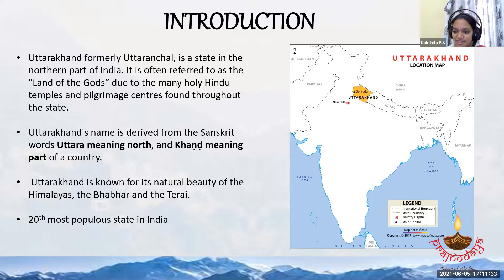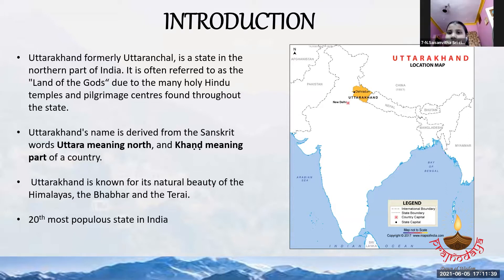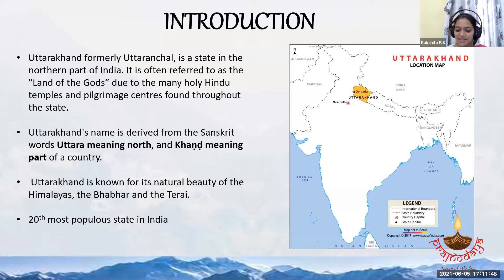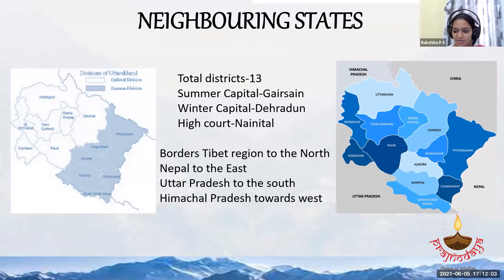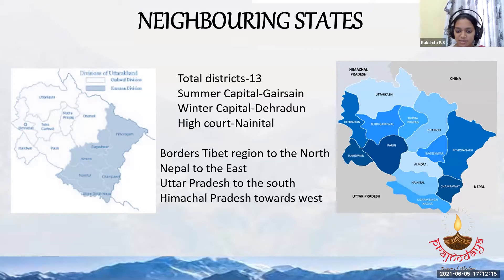Can you guess the two capitals? Yes, Dehradun! It has two capitals — one is the summer capital and the other is the winter capital. The summer capital is Gairsain and the winter capital is Dehradun. There are totally 13 districts, which are divided into the Garhwal region and the Kumaon region. The High Court is located in Nainital, which serves all the districts.